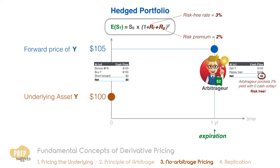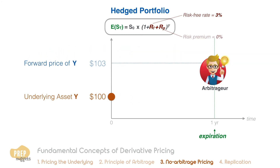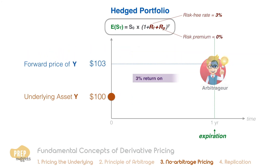We know that such arbitrage opportunities cannot last for long, for when many arbitrageurs realize the opportunity, the buying pressure on asset Y will push its price up and the increase in shorts will push the forward price down. This continues until the forward price returns of this portfolio are equal to the risk-free rate of 3%, when no arbitrage is possible and the risk premium is zero.